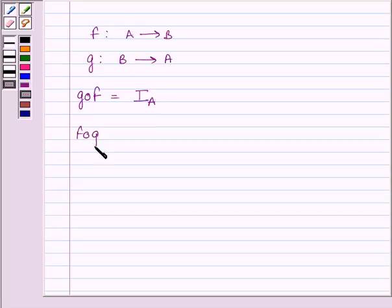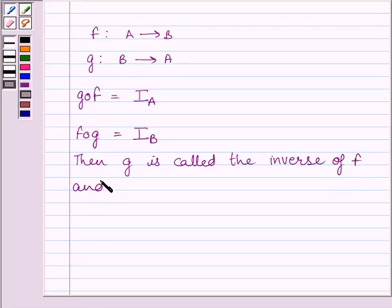First of all, let us understand that if we are given a function f from a to b such that it is invertible, then there exists a function g from b to a such that g of f is equal to identity function on set a and f of g is equal to identity function on set b. Then g is called the inverse of f and it is denoted by f inverse.